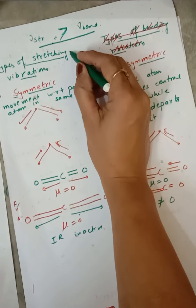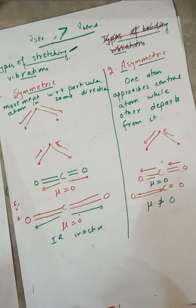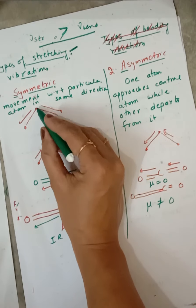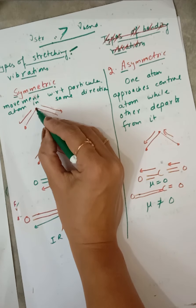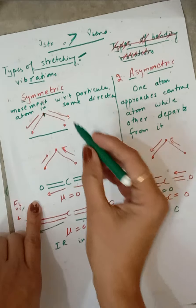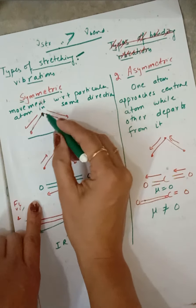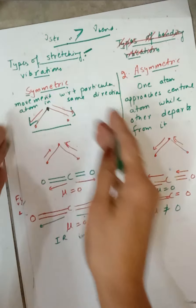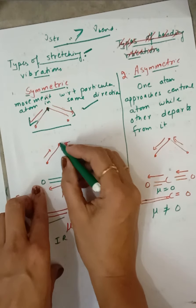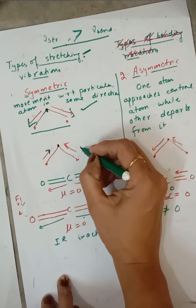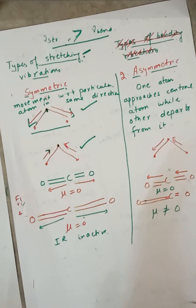Now in case of stretching vibration, there are two types: symmetric stretch and asymmetric stretch. In symmetric stretch, atoms move in the same direction with respect to a particular central atom — for example in CO2, both oxygen atoms move away from the central carbon, or both move toward it. This is symmetric stretch.